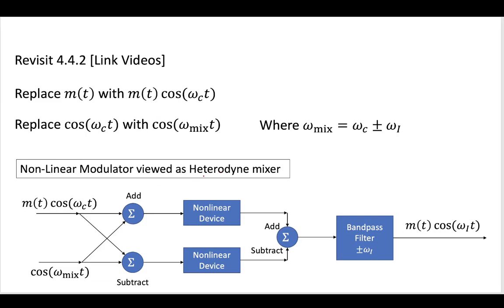You can view a non-linear modulator as a heterodyne mixer — just replace your original message with the modulated message. So instead of having just the message as the input to the non-linear device, put the modulated message in as one signal input, and put your mixer wave in as the other input. If you do this and change the output filter to a bandpass filter at the intermediate frequency, then you can view a non-linear modulator as a heterodyne mixer that forces two waves together and produces a modulated wave at your new intermediate frequency.